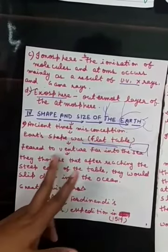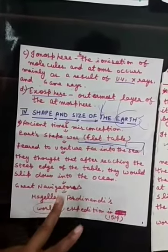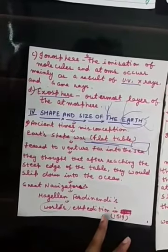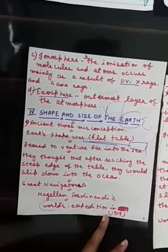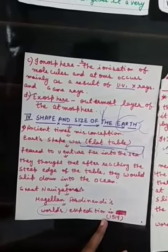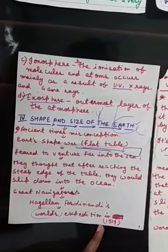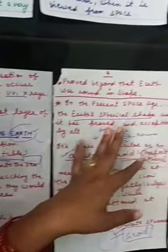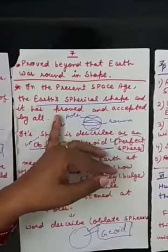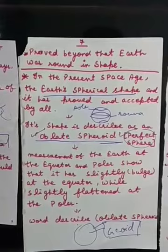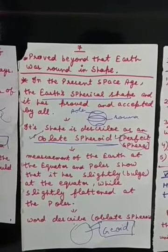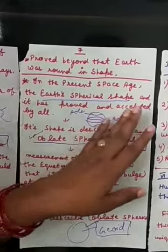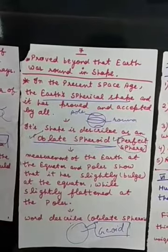Then the next scientist, Ferdinand Magellan, took a world round — circumnavigation — in 1519. It was proved beyond doubt that the earth was round in shape. Now in the present space age, we say that the earth is spherical in shape, and it is an established fact accepted by all.